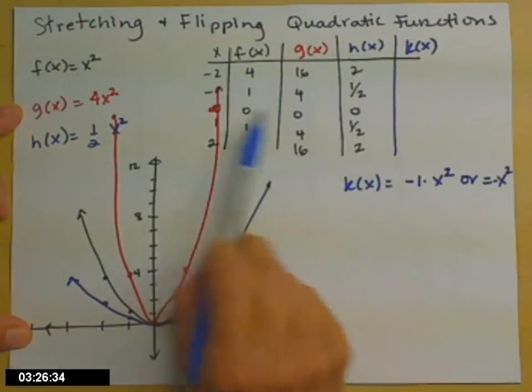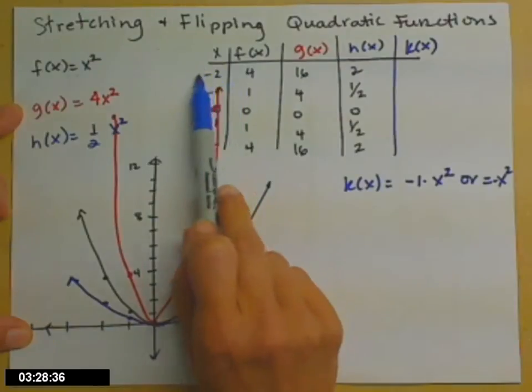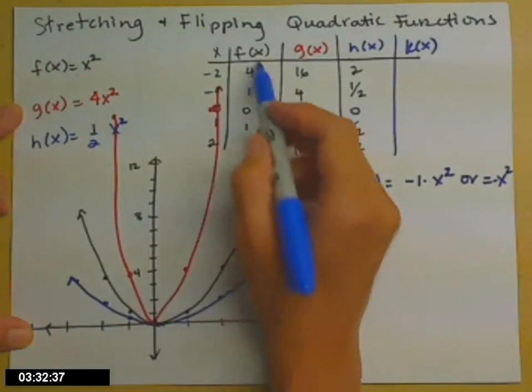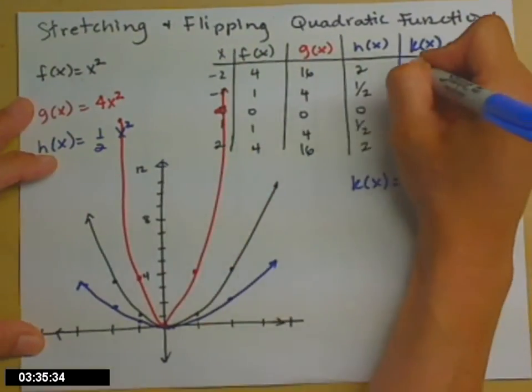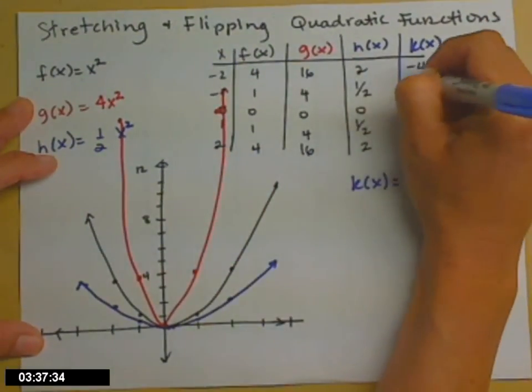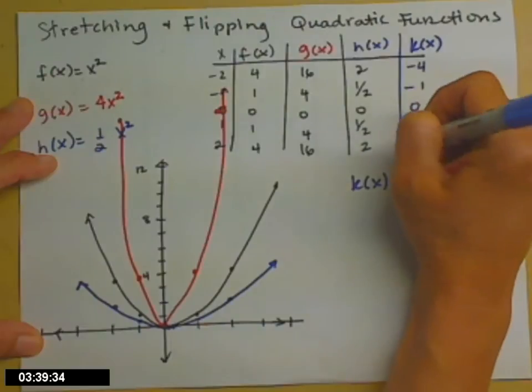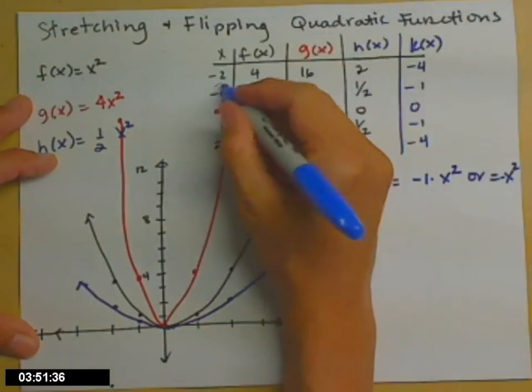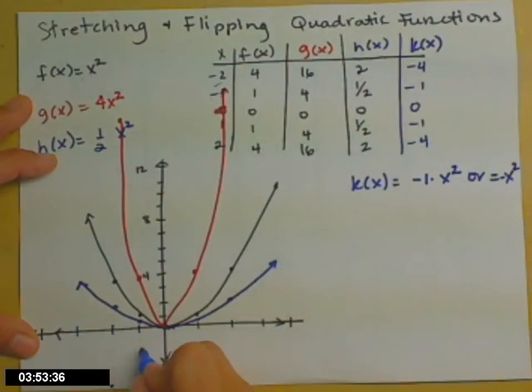So to complete my table of values, you still square the -2 and then apply the negative sign. So in essence, I just need to change the signs of all of the y values I had for f. So to plot those points, if x is 2, y is -4. I'm off screen. If x is -1, y is -1. If x is 0, y is 0. There's a common point.